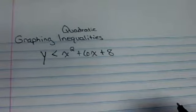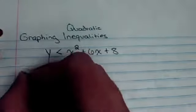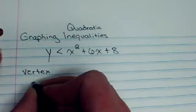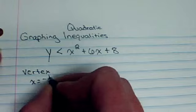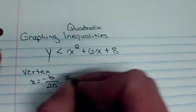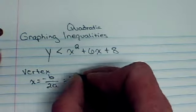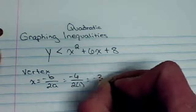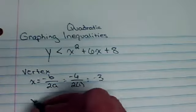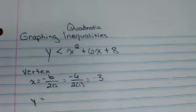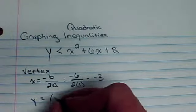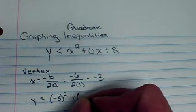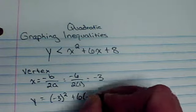Okay, so let's find our key features so that we can graph it very quickly. The vertex we can find by finding x equals negative b over 2a. That's going to be negative 6 over 2 times 1, which gives me negative 3. We can find the y value that goes with it by plugging that in to our function. So negative 3 squared plus 6 times negative 3 plus 8.